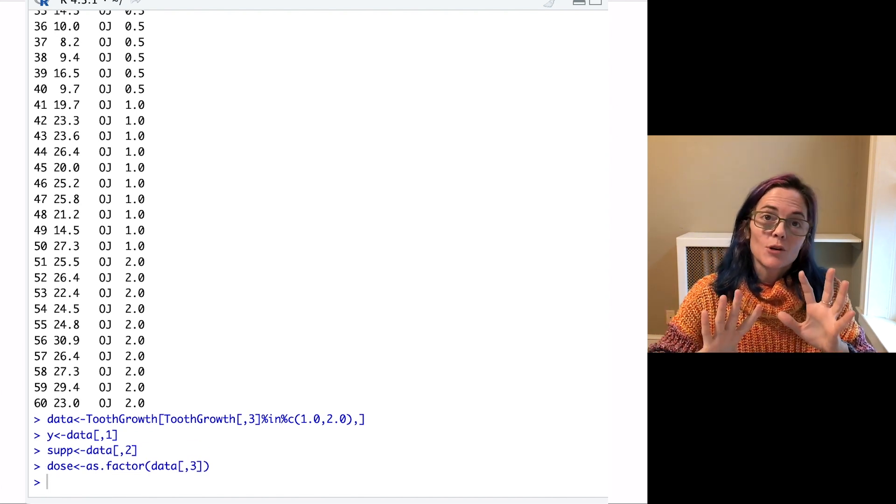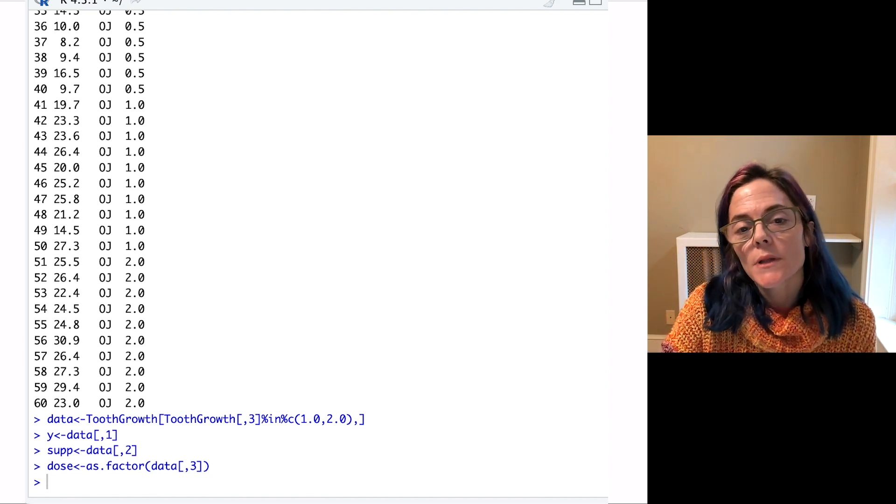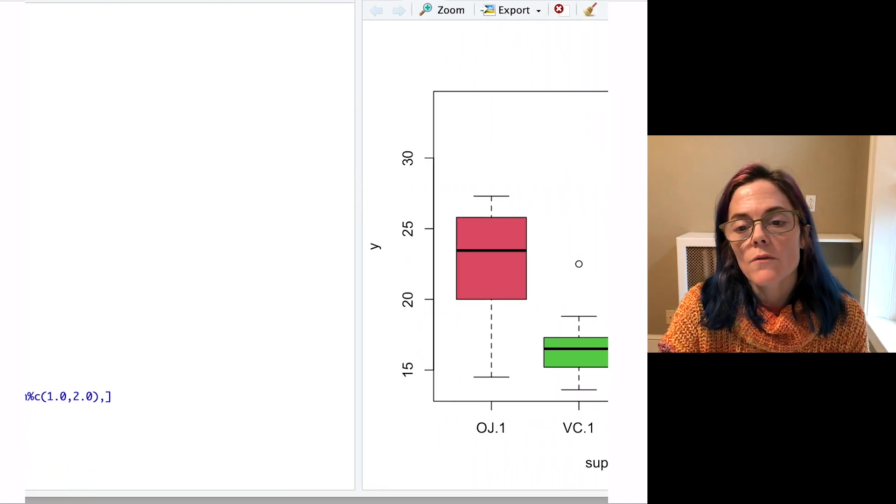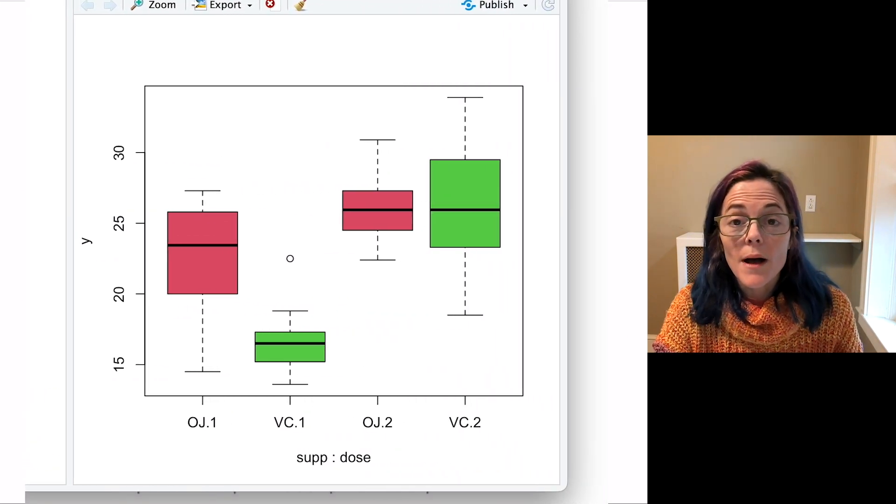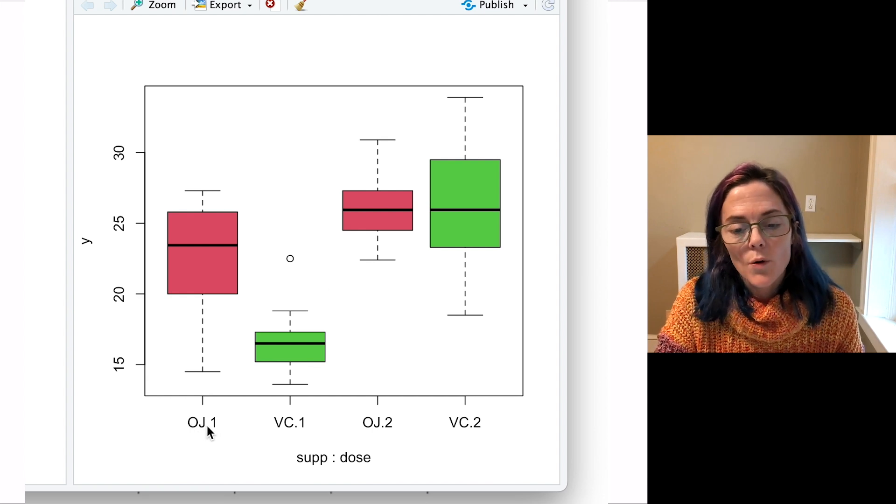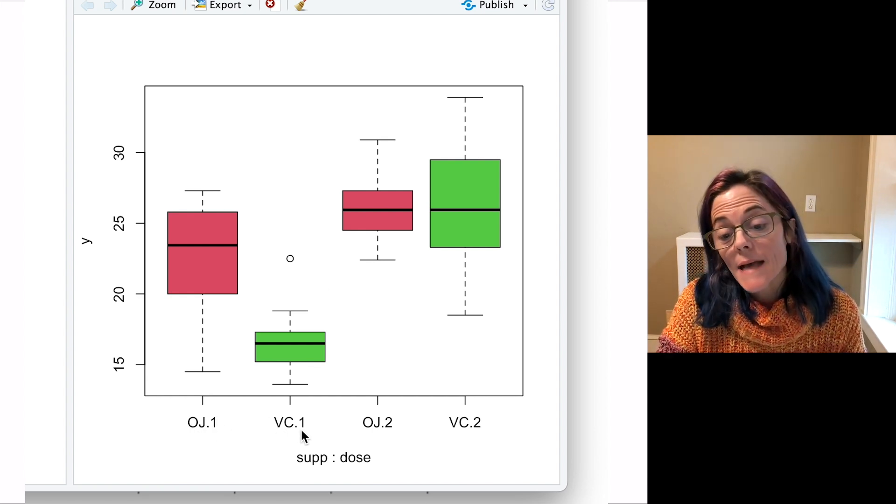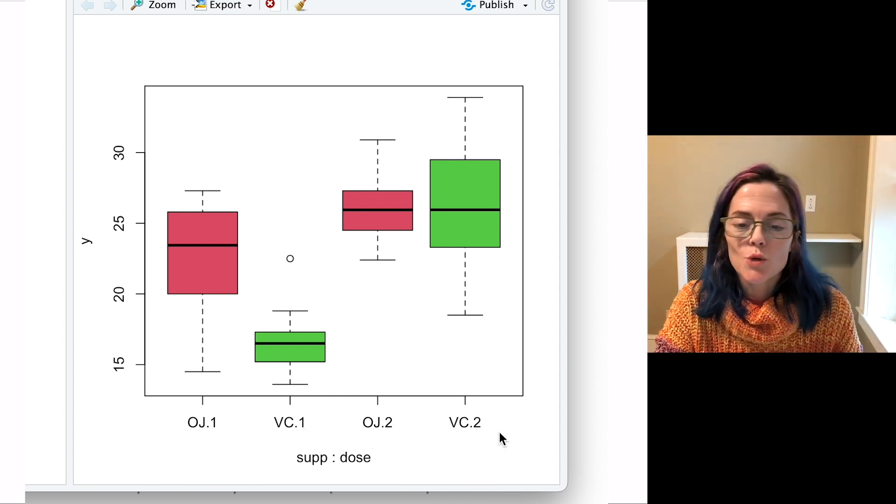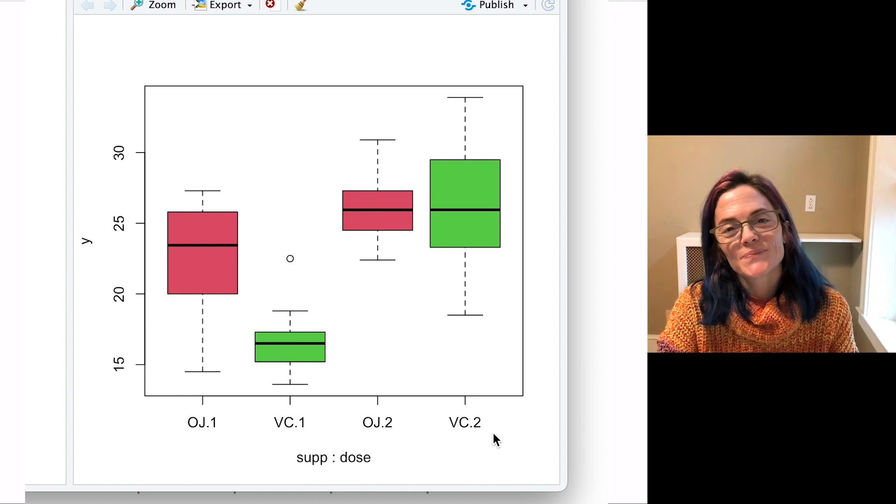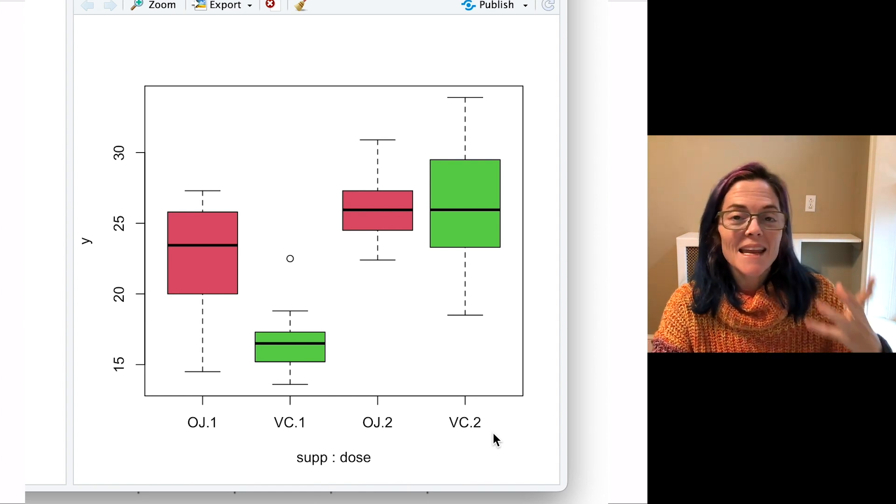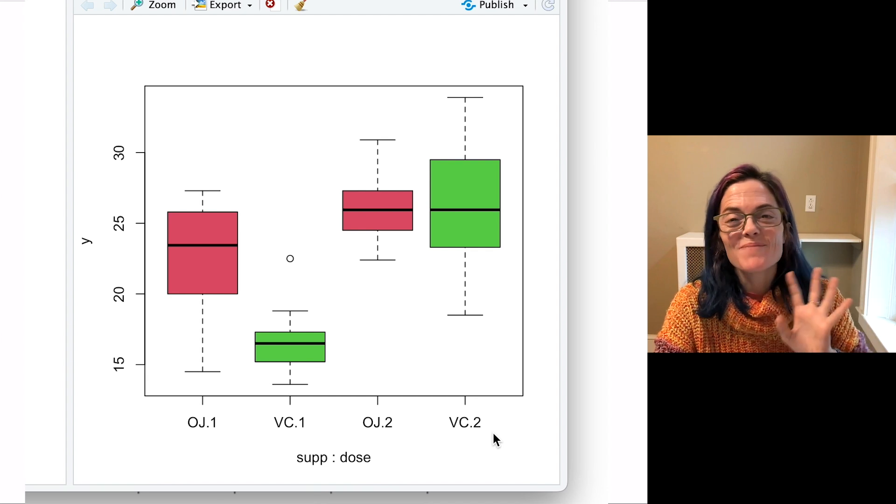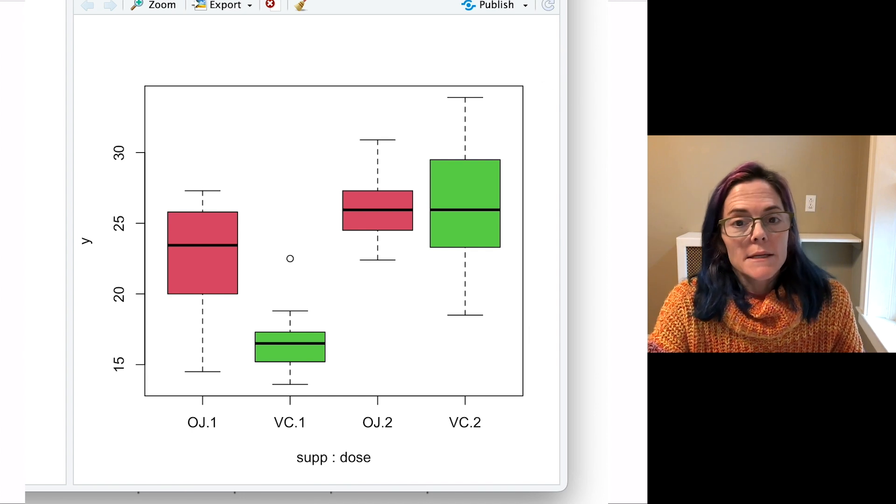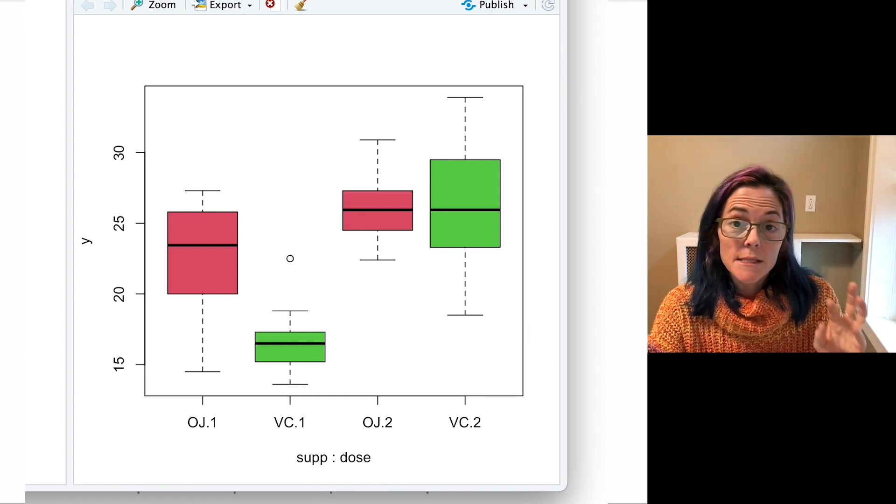Now, if we want to see graphically, we can do a box plot. But let me move this over. Here are the four possibilities. We either have orange juice, one milligram per day, ascorbic acid, one milligram per day, orange juice, two milligrams per day, or vitamin C, two milligrams per day. So as I mentioned at the beginning of this video, the group membership depends on both factors. That's fundamental to a two-way ANOVA.